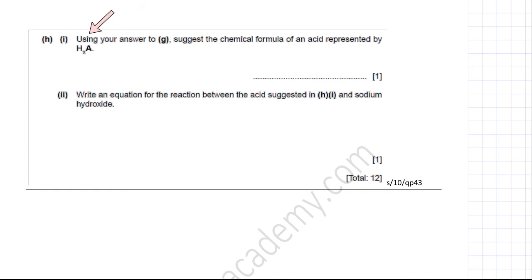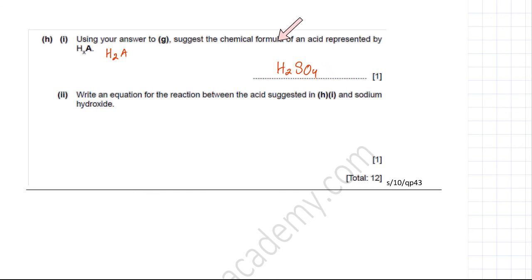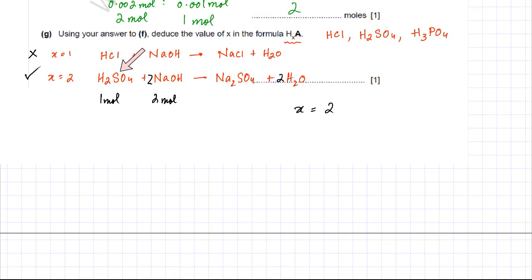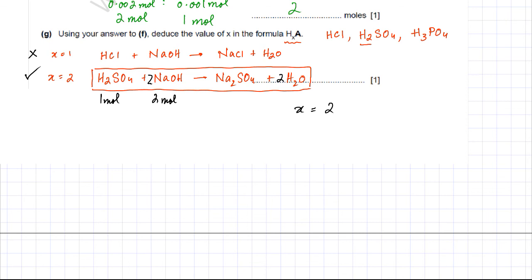Part H asks for a suggested chemical formula of the acid HXA, given X = 2. A real-world acid with two hydrogens is H2SO4, sulfuric acid, which is a diprotic acid. The equation for its reaction with sodium hydroxide is H2SO4 + 2NaOH → Na2SO4 + 2H2O, giving a ratio of 1 mole of acid to 2 moles of NaOH.